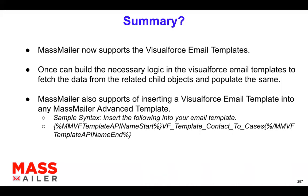This is more about making you aware of what is possible, and we're going to keep adding features so you can get data from complex object relationships. We also provide support to add a Visualforce email template into a MassMailer advanced template. It may sound complicated but it's easy once you see it. If you're building templates using the MassMailer template builder, you can still use Visualforce templates — you just have to embed the Visualforce email template API name into the MassMailer advanced template.